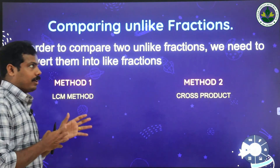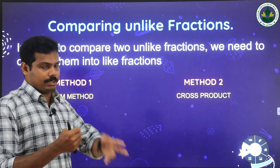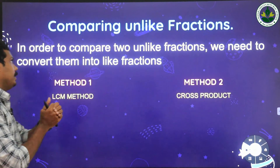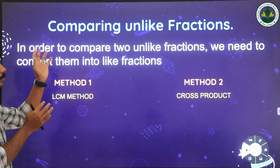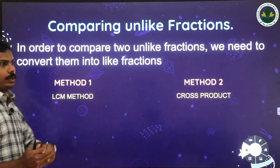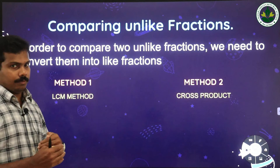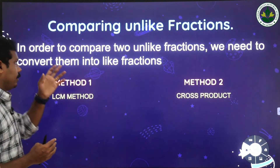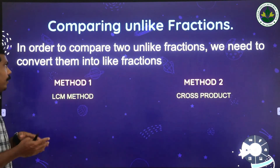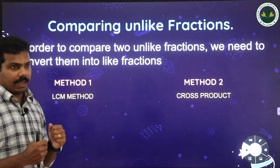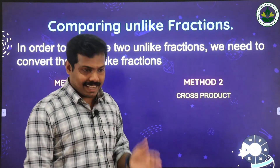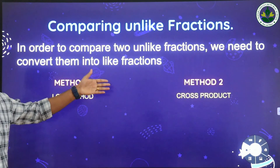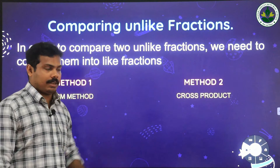For comparing unlike fractions, there are two methods: the first is the LCM method, and the second is the cross product method. We need to convert the unlike fractions into like fractions in order to compare them. Always remember, you must convert the unlike fractions into like fractions first.